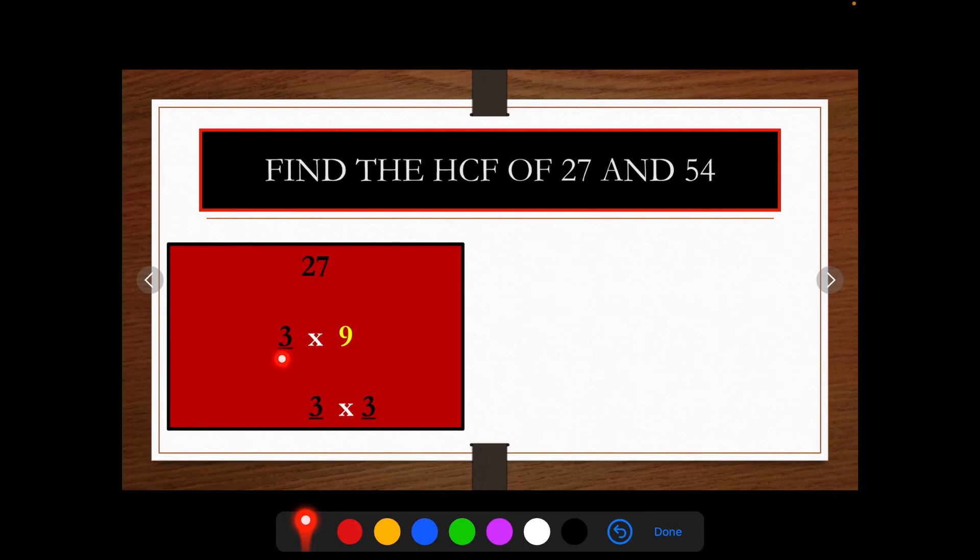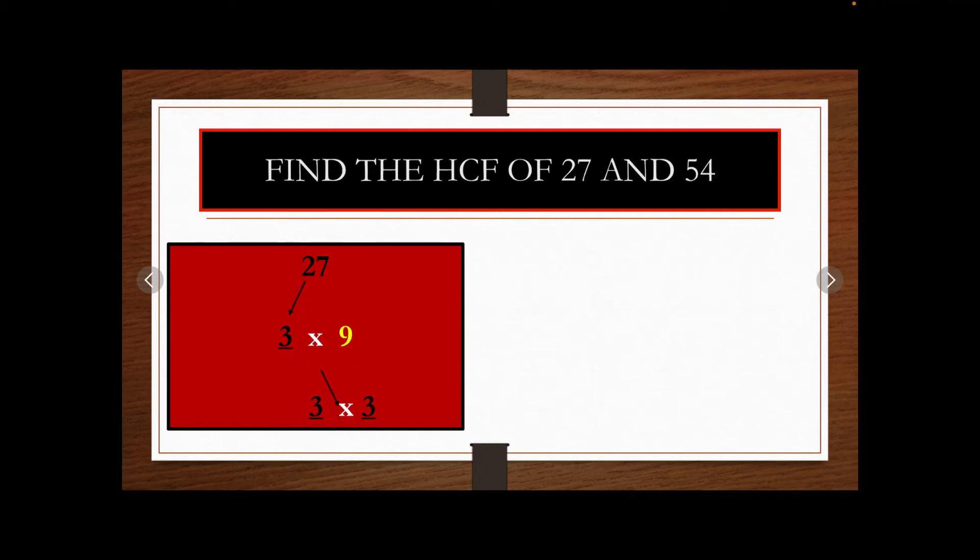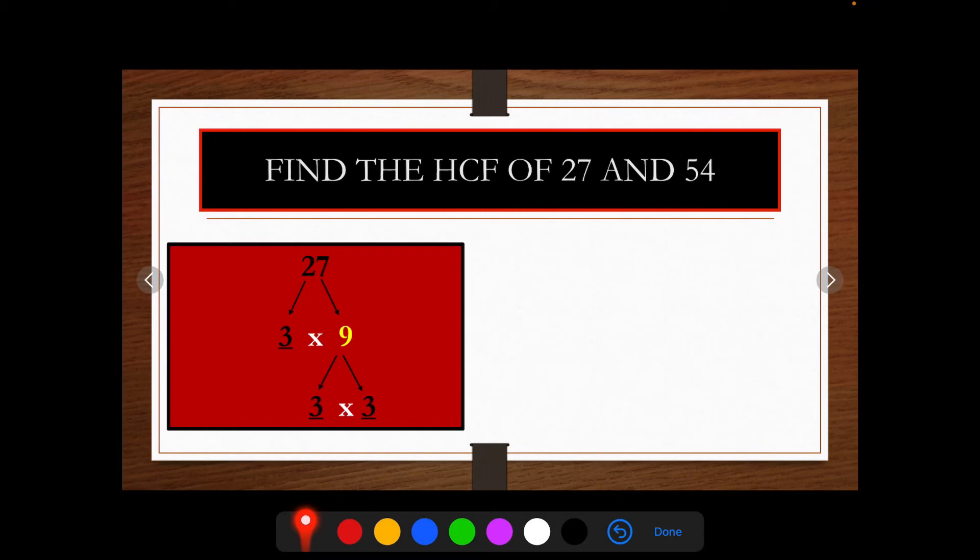If the number is prime, no need to factorize it again. If the number is composite, factorize it further. So, 9 can be factorized as 3 times 3 equals 9. If we get all factors at the end as prime numbers, no need to factorize it again. Now, see the second number 54.